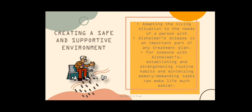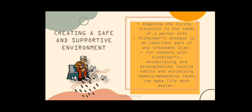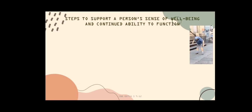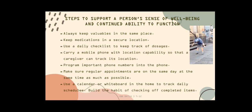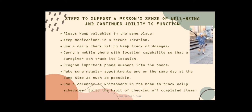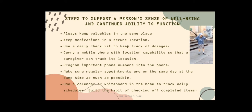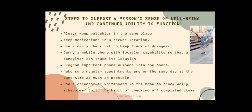Creating a safe and supportive environment. Adopting the living situation to the needs of a person with Alzheimer's disease is an important part of any treatment plan. Establishing and strengthening routine habits and minimizing memory-demanding tasks can make life much easier. Steps to support well-being include: always keep valuables in the same place, keep medications in a secure location, use a daily checklist to track dosages, carry a mobile phone with location capability, program important phone numbers into the phone, and make sure regular appointments are on the same day and time. Use a calendar or whiteboard to track daily schedules and build the habit of checking off completed items.